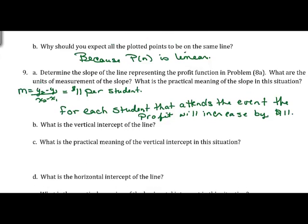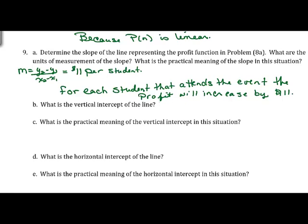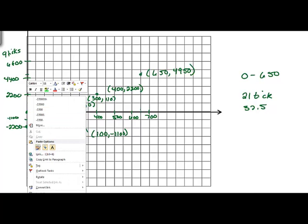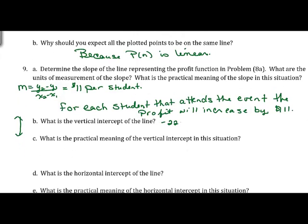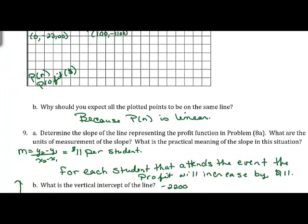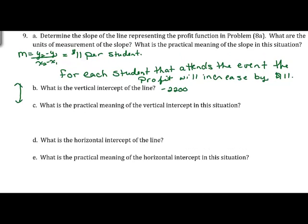What is the vertical intercept of the line? The y-axis intercept occurs at negative 2200, where the line crosses the y-axis. The x-axis is N (number of students) and the y-axis is P(N) (profit in dollars).